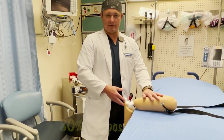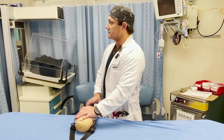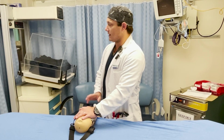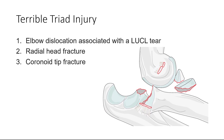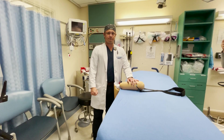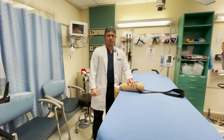The other type is anterior. The terrible triad is a combination of injuries seen with an elbow dislocation: fracture of the radial head and a fracture of the coronoid process, culminating in a more severe case of an elbow fracture with long-term complications and repairs that are more difficult.